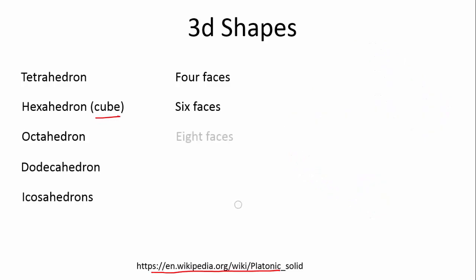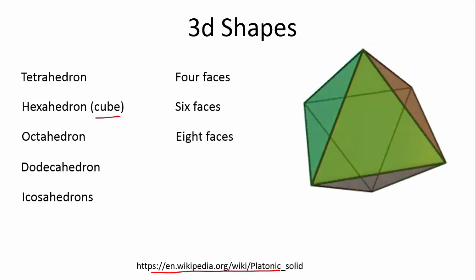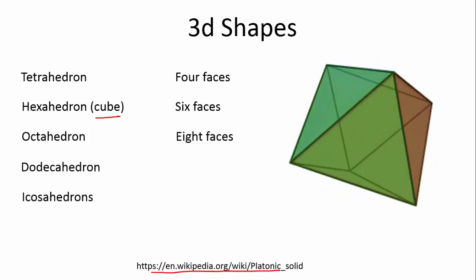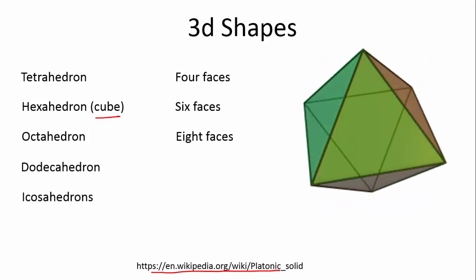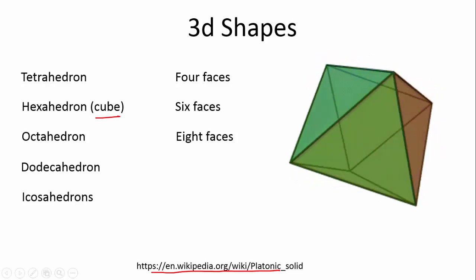Let's look at an octahedron. This is 8 faces. Oct is 8. And this creates a triangular, almost diamond-looking shape. Can you visualize those 8 faces? 4 on each side, or 4 on each half?